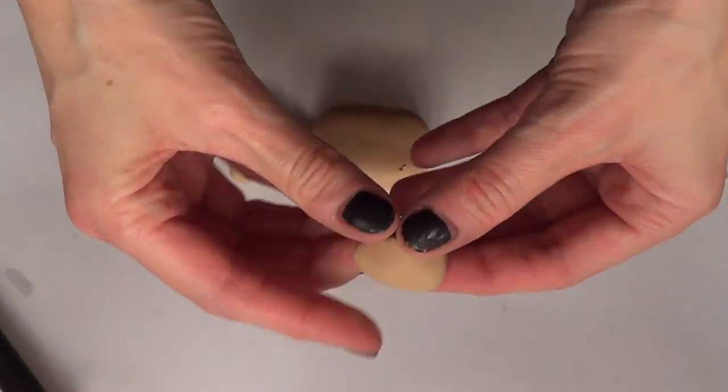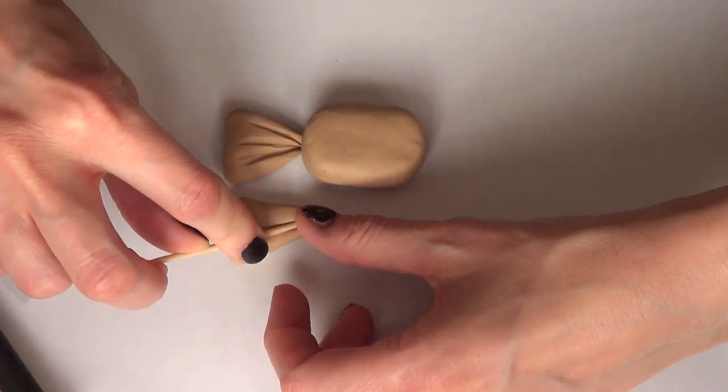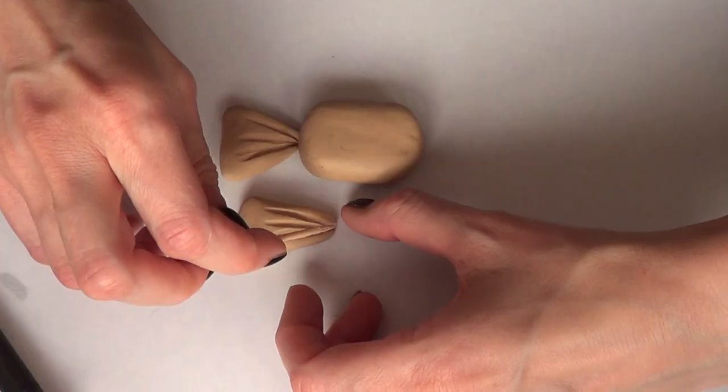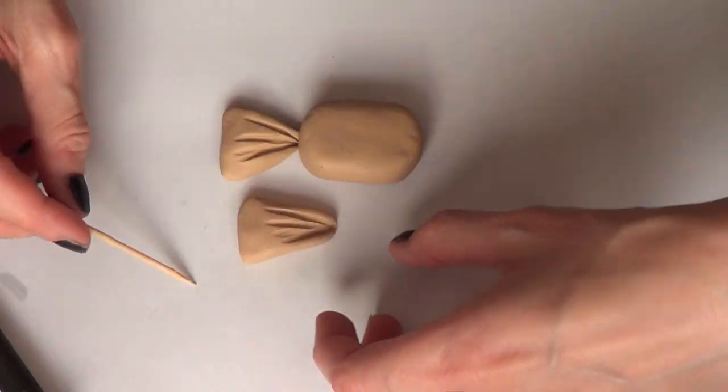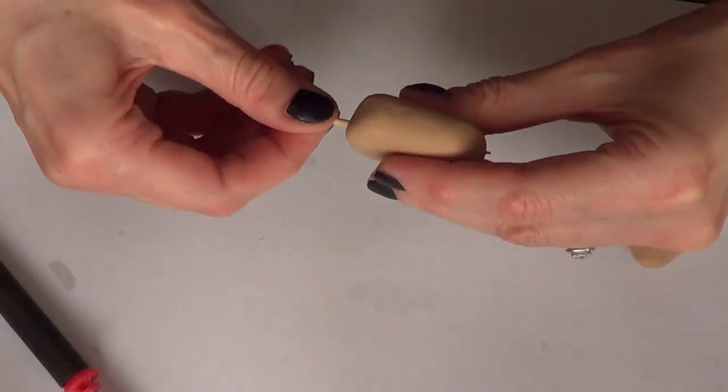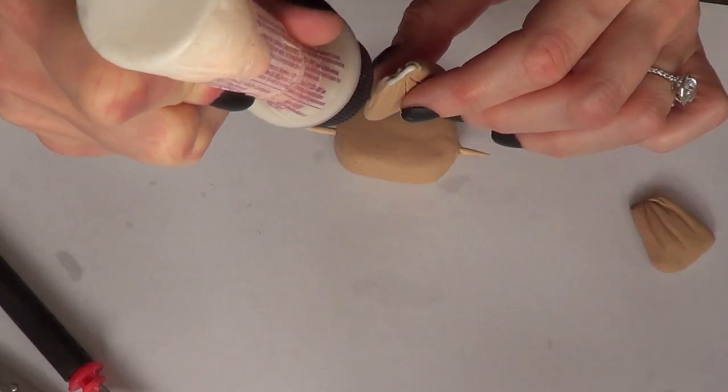Then with a toothpick, I'm just going to mark and make the indentations that candies tend to have, like the paper wrap, just to make it more real. To put this whole thing together, I'm just going to be taking the same toothpick that I worked with before and gather the whole piece from the middle.